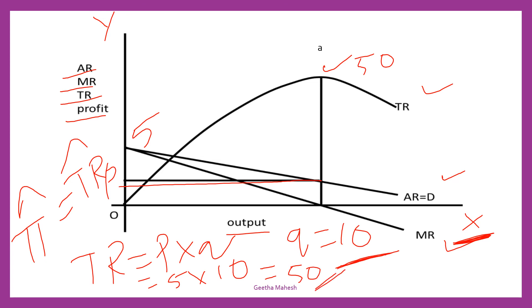For zero cost producing firms, the quantity is determined at that level, where total revenue is maximum. How you are going to determine the price? Total revenue is 50 divided by the quantity is 10.